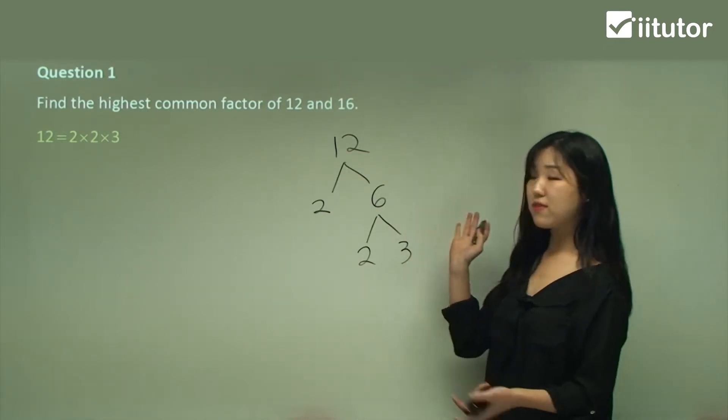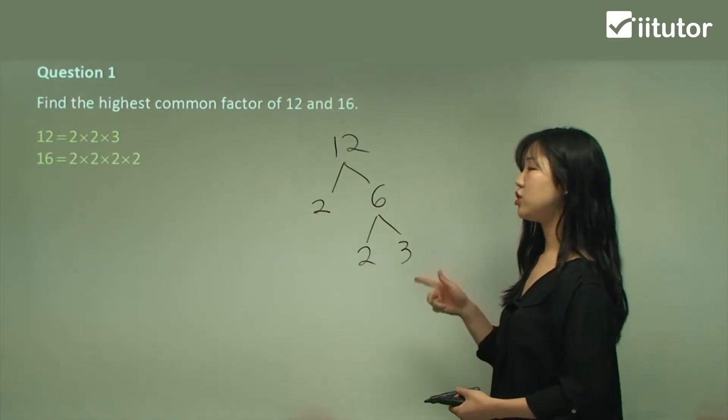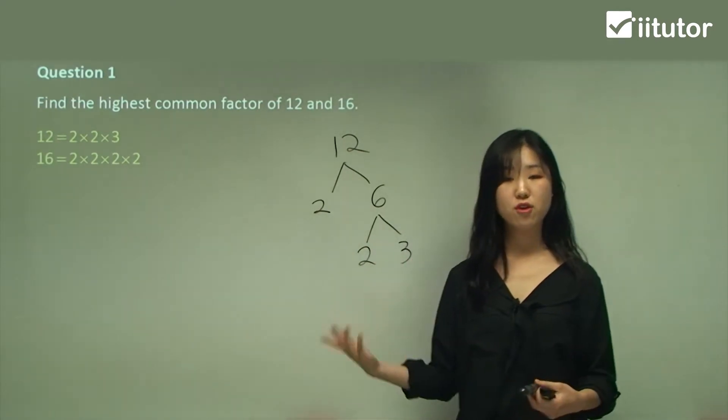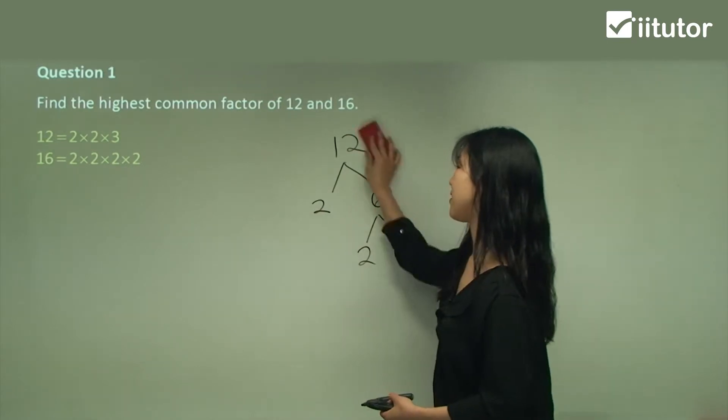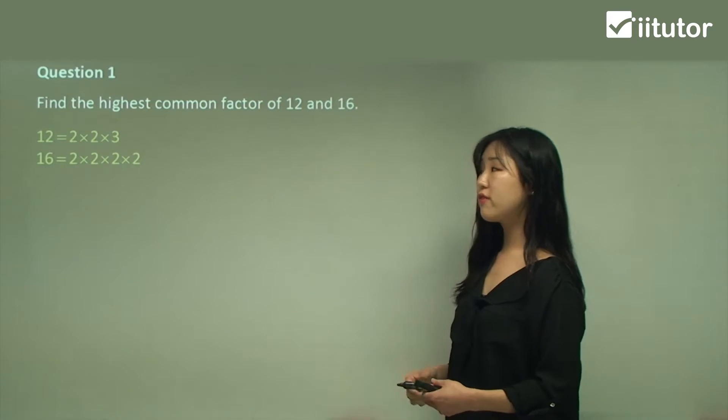Try the same thing for 16 if you're not really confident. Try the same tree method I did. It should be 2 times 2 times 2 times 2. Just broke it down into my prime factors. Now, can you spot what's the same? What's common for both?